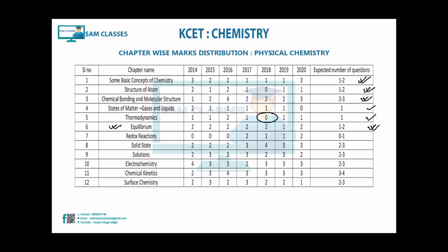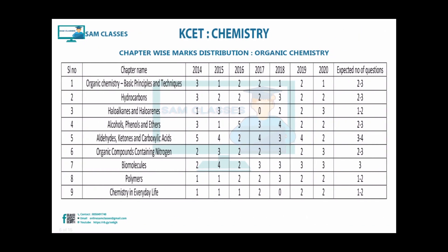Redox - around zero to one, almost constant for the past four years. Solid state: very important, two to three. Solutions: around two to three. Electrochemistry: from 2014 to 2020, it has done very well, with questions coming in large quantity. Chemical kinetics: almost constant at two to three to four for the last four years. Surface chemistry: also good weightage, two to three.